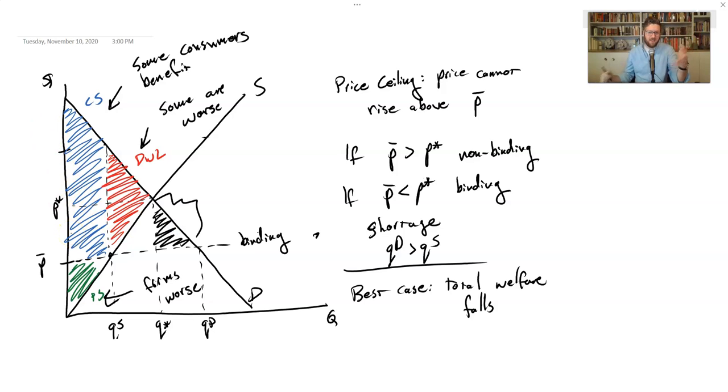We don't normally draw that because it's really messy, but just emphasizing that this diagram here is the best case scenario for how much welfare falls. It would normally fall worse than this if we can't make sure that the people who most want the good, most willing to pay for it, are able to get it.